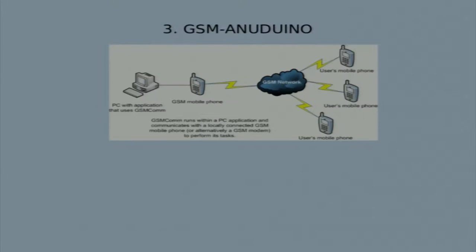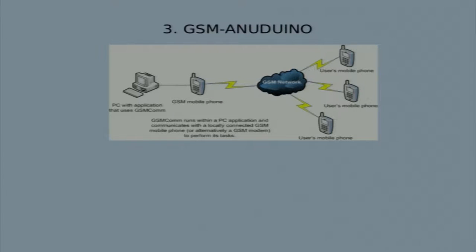We interfaced the GSM module as well. There was a great challenge with this because it occupies a lot of memory, and Anudino doesn't have hardware serial support. The GSM module is just like a mobile for a mobile operator — you insert the SIM and you can send and receive SMSes. What we did was switch on an LED at home and send an acknowledgement to the user's mobile.